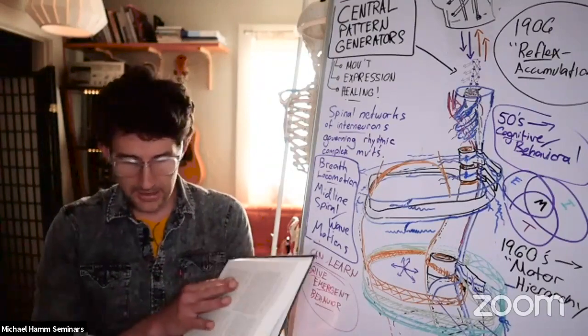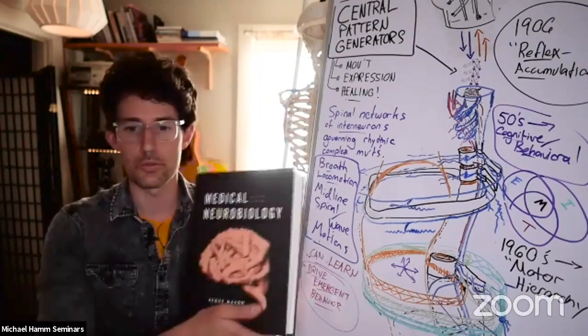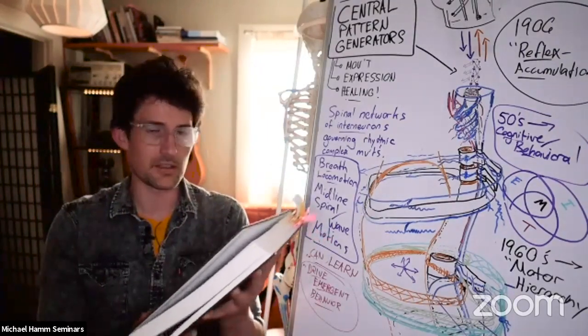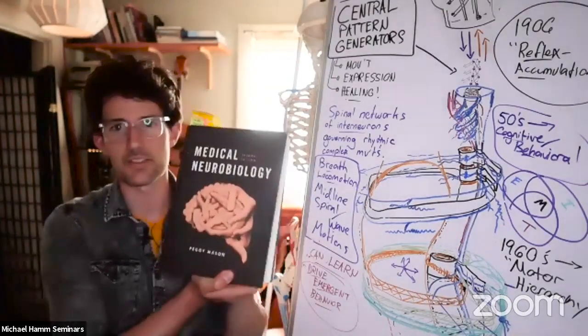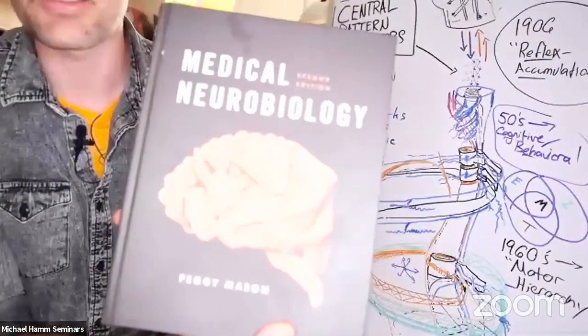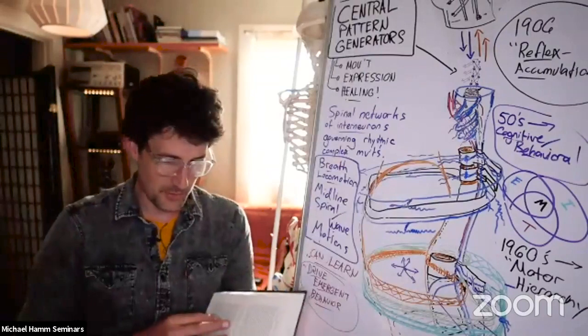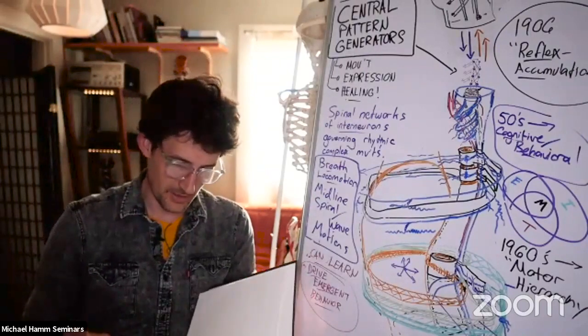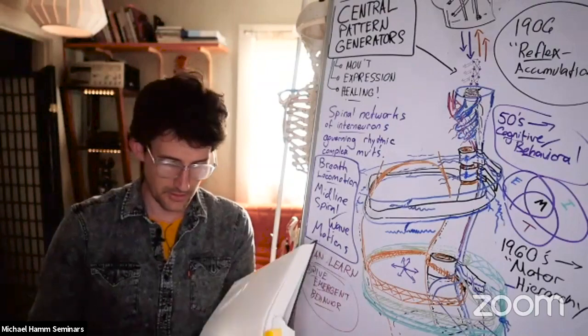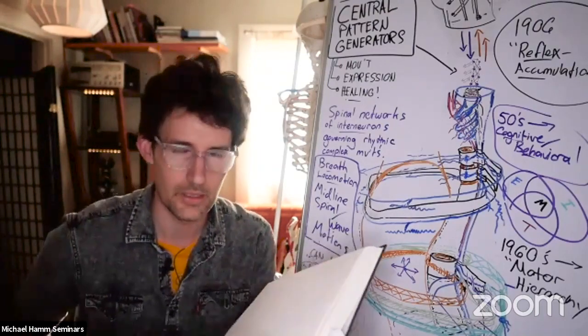So to that end, if you are a nerd at all for the nervous system, I must say that this is one of the most worthwhile texts that you can get. It's by Peggy Mason and it's called Medical Neurobiology. Absolute stunner of a book. So fun to read. Such a good writer, such a clear thinker. So I'm going to give you two short readings from Peggy Mason here.